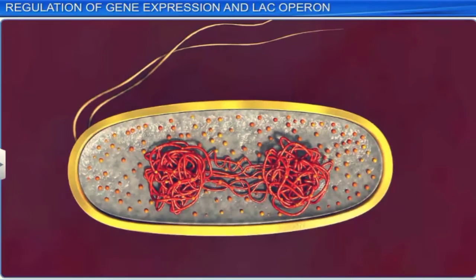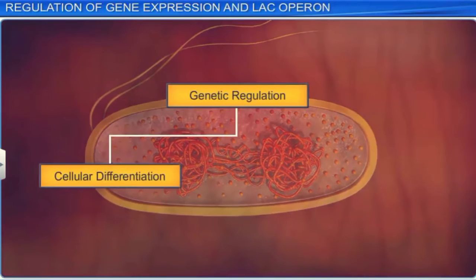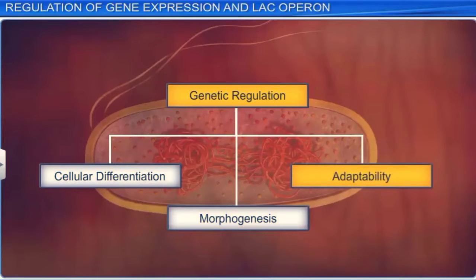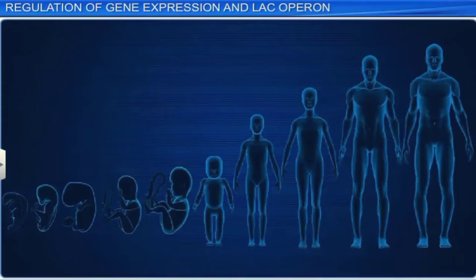This shows that gene expression depends on the metabolic, physiological, or environmental conditions that exist in the cell. Moreover, gene regulation allows the cell to control its structure and function. This is the basis of cellular differentiation, morphogenesis, and adaptability of any organism. In fact, the development and differentiation of an embryo into an adult is also the result of coordinated regulation of expression in several sets of genes.